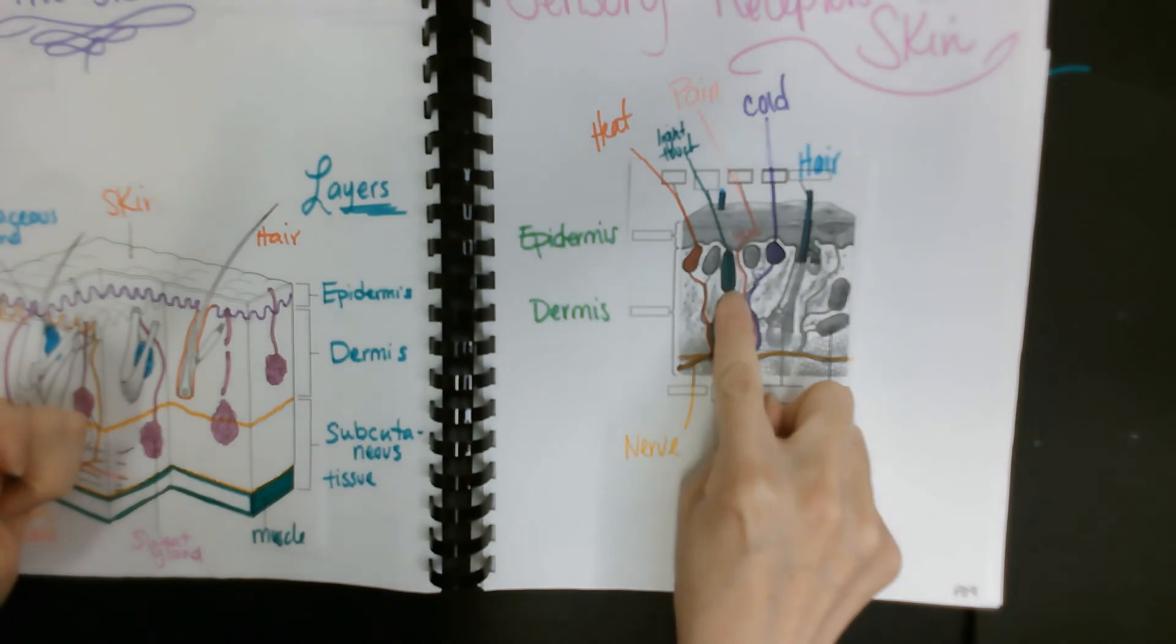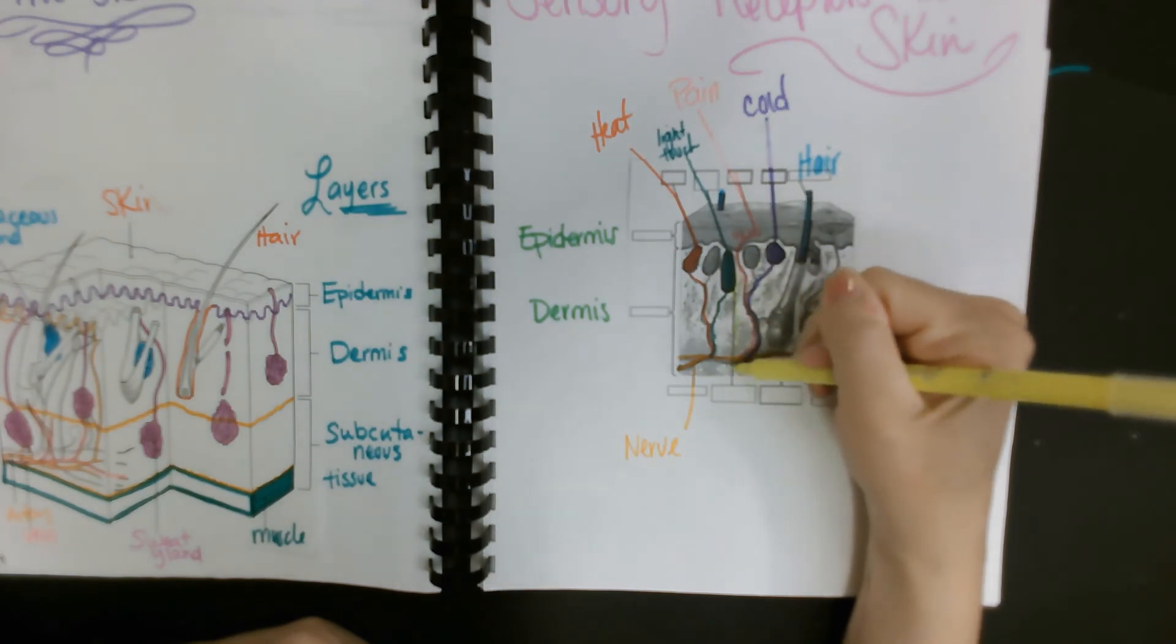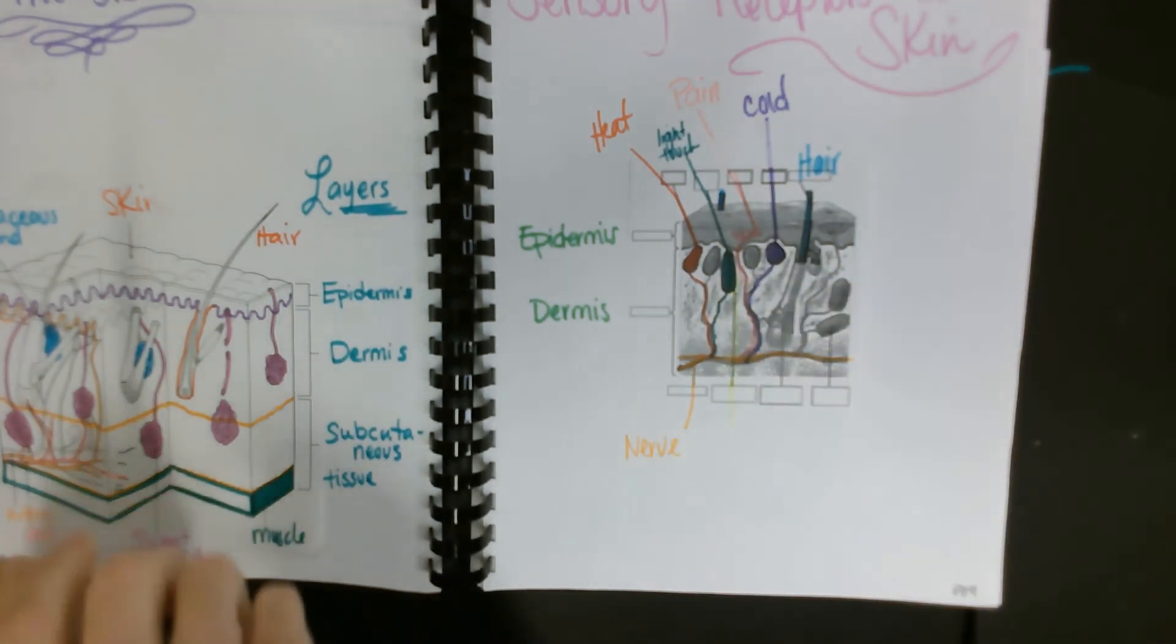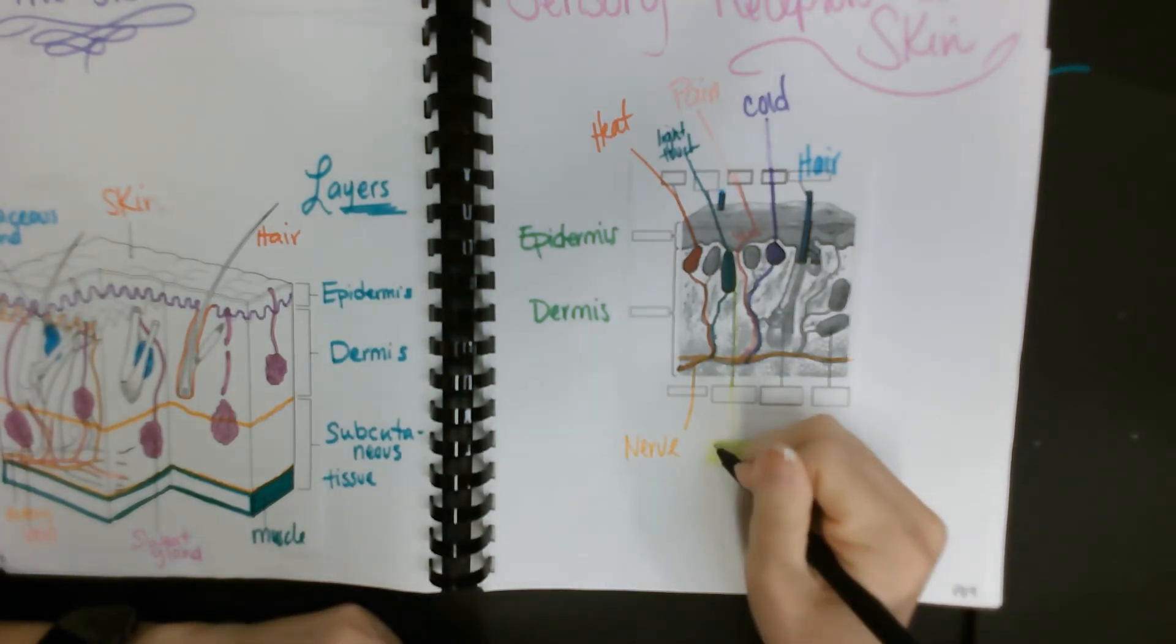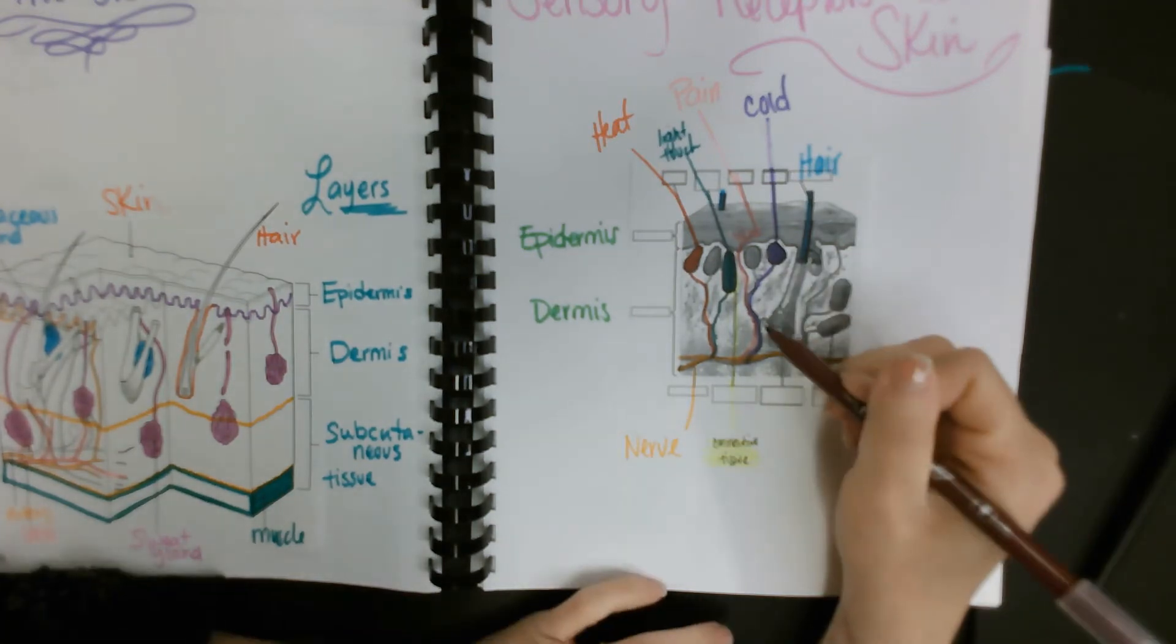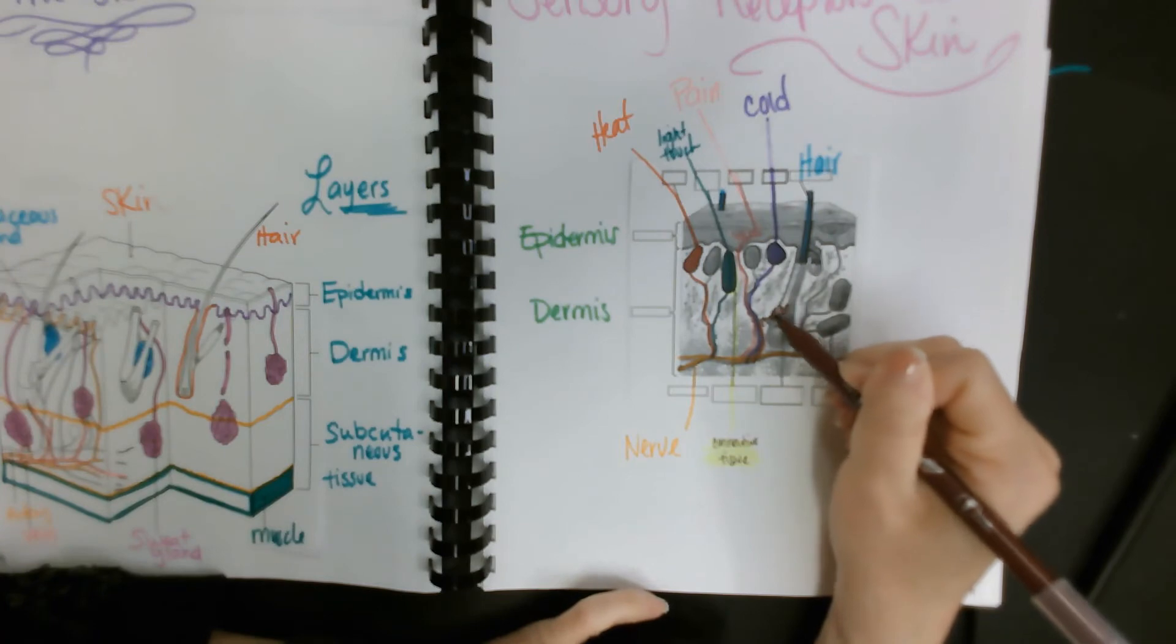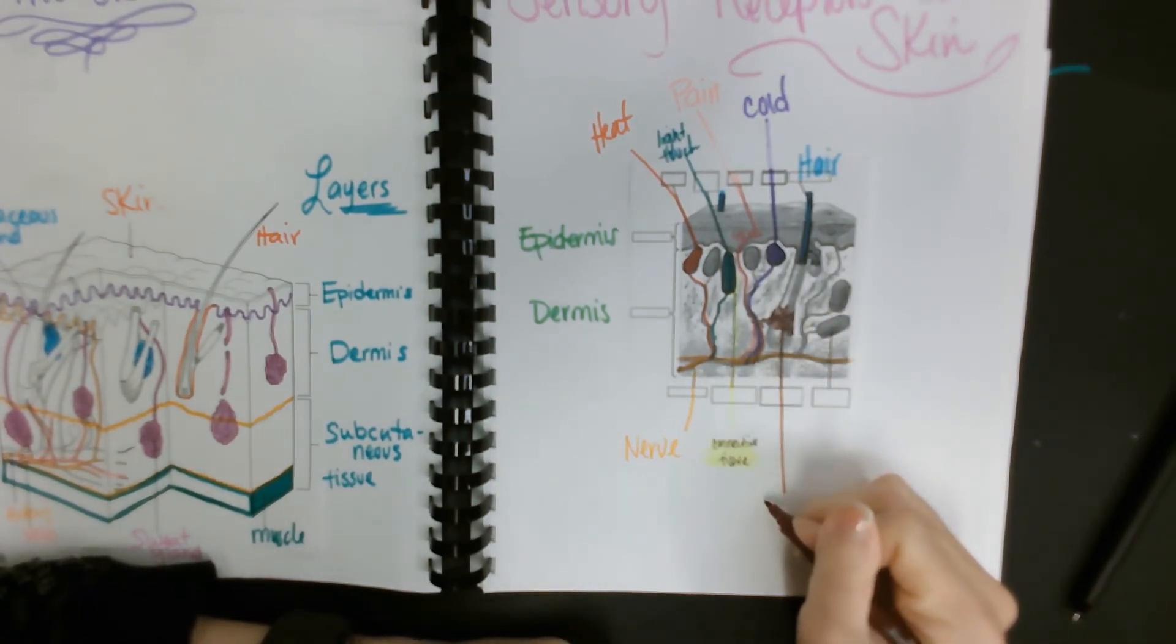This here on the outer part of it, and I'll color it in yellow so you can see a good outline, is going to be the connective tissue. Then you have your hair movement, so this little receptor here that is kind of wiggled around, kind of wrapped around the actual hair follicle on the outer part. This is going to be hair movement.